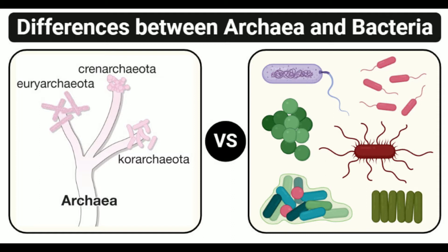Basis for Comparison — Archaeobacteria vs Bacteria. Archaea is a group of primitive prokaryotes that, based on their distinct characteristics, form a separate domain from bacteria and eukaryotes. Bacteria are single-celled primitive organisms that form a domain diverse in shape, size, structure, and even habitats.